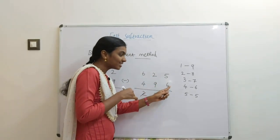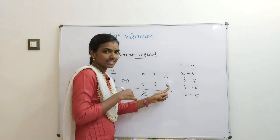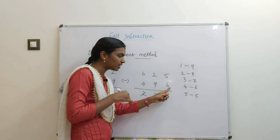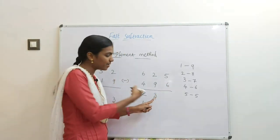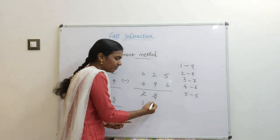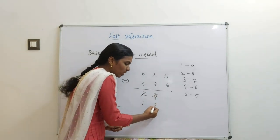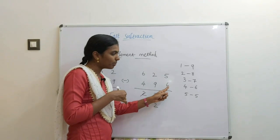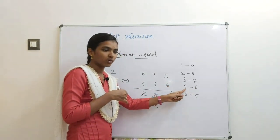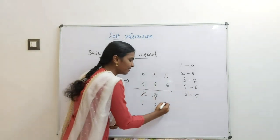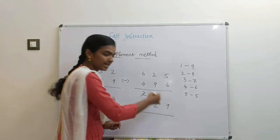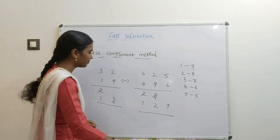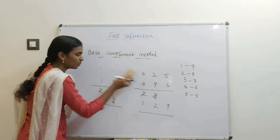Coming to the next digit: 5 minus 6 — not possible. So reduce one from the left side: 3 minus 1 is 2. Apply the complement: complement of 6 is 4, and 4 plus 5 is 9. So the answer is 129.